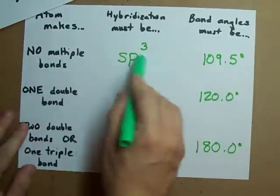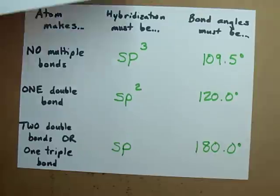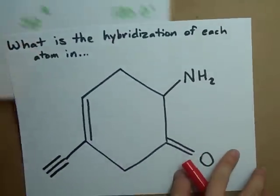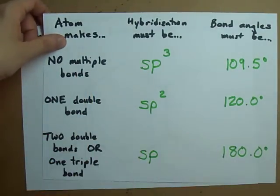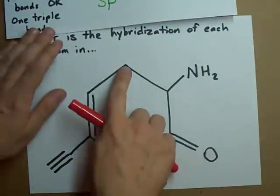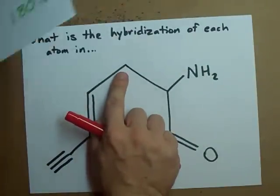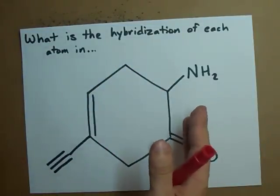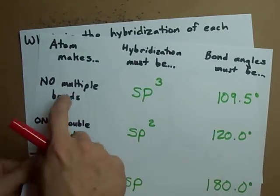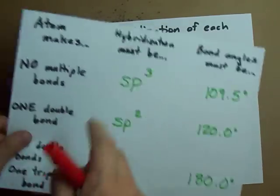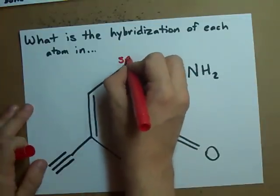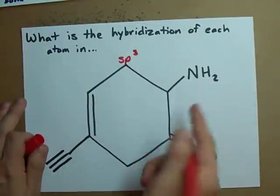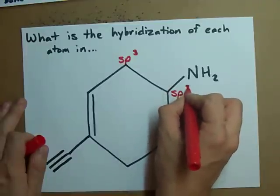Keeping these rules in mind, let's label the hybridization of each atom in the original molecule. We're counting the number of double bonds and triple bonds that each atom makes. Here's an atom — single bond, single bond, and there are a couple of hydrogens not shown — all single bonds, no multiple bonds, so it must be an sp3 carbon. This one also has no multiple bonds, all single bonds — that must be sp3.